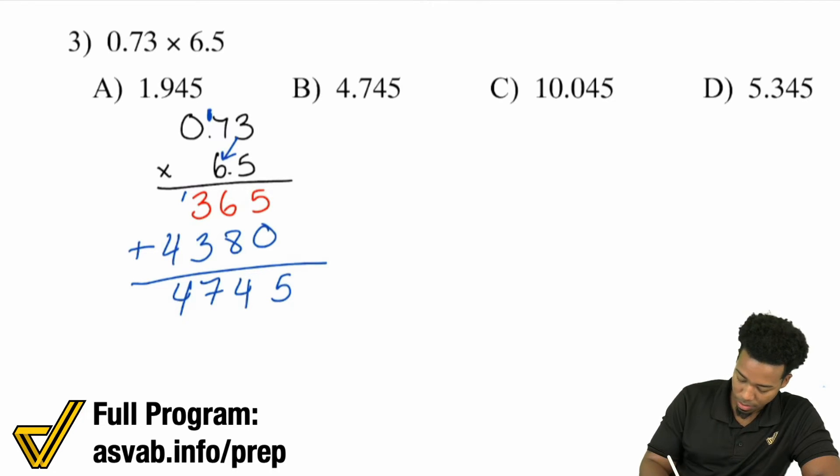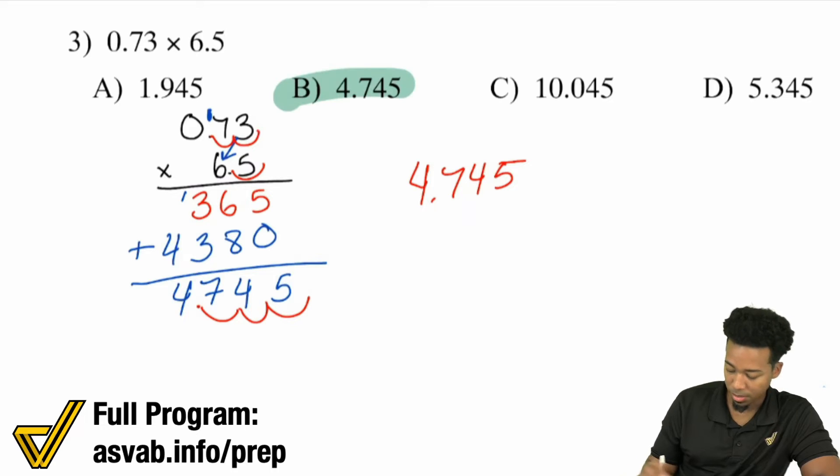Notice that we have 1, 2, 3 decimal places. 4.745 is the answer and that is B.